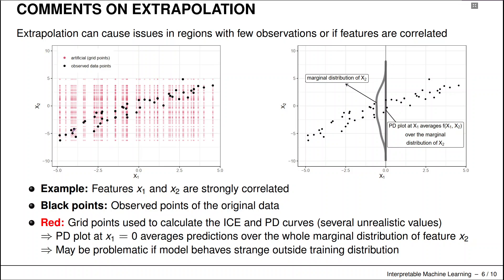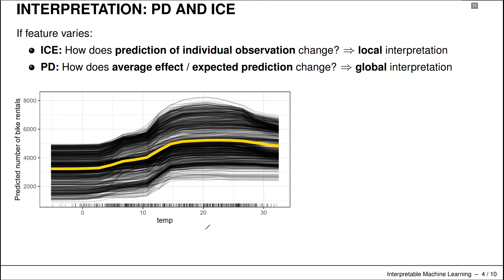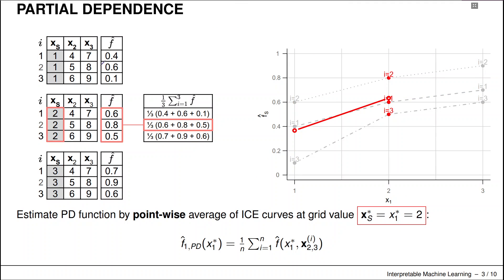So in this case, our features x1 and x2 are strongly correlated. The black points are the observed points of the original data, and you can directly see the correlation from the distribution. And now the red points are the grid points used to calculate the ICE and PDP curves. And these are exactly these points that are constructed from these virtual data matrices where we plug in the grid values for the first column for x1.